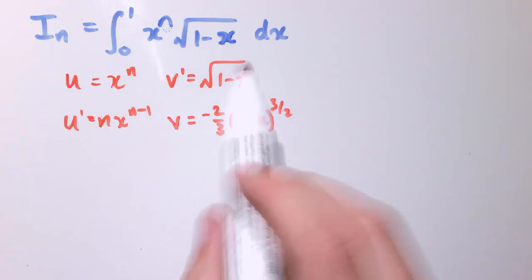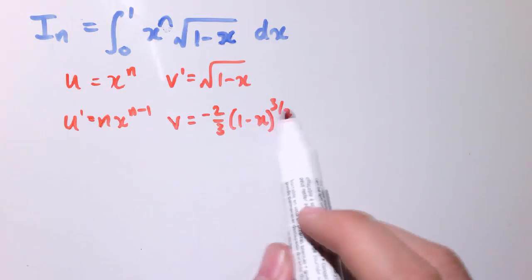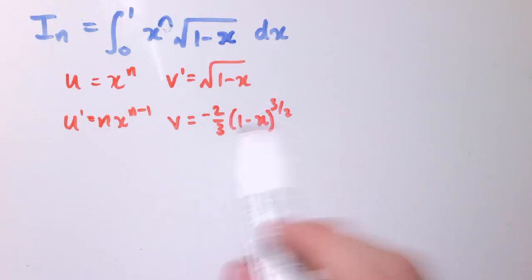The integral, this is 1 minus x to the half, so if we increase that power to 3 over 2, and then work out that when I differentiate this, I need a factor of minus 2 thirds in the front. If you're not sure about that, look up stuff on the chain rule and reverse chain rule integration.